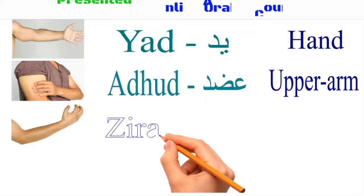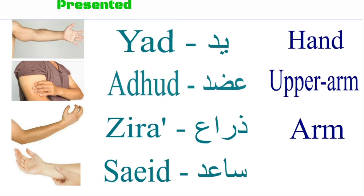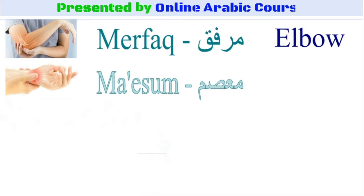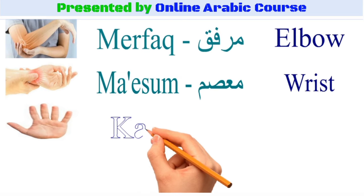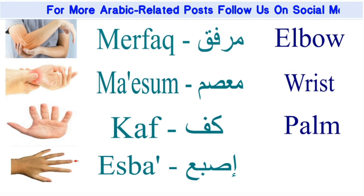Zira' means arm. Saaid means forearm. Mirfak means elbow. Mi'a sum means wrist. Kaf means palm. Isba' means finger. Katif means shoulder.